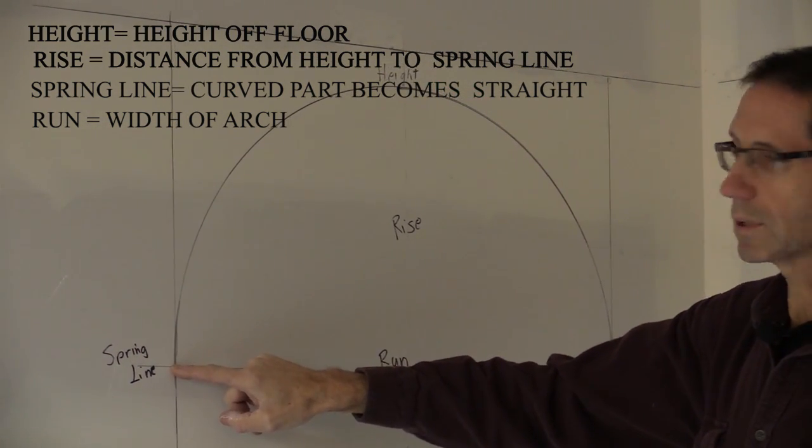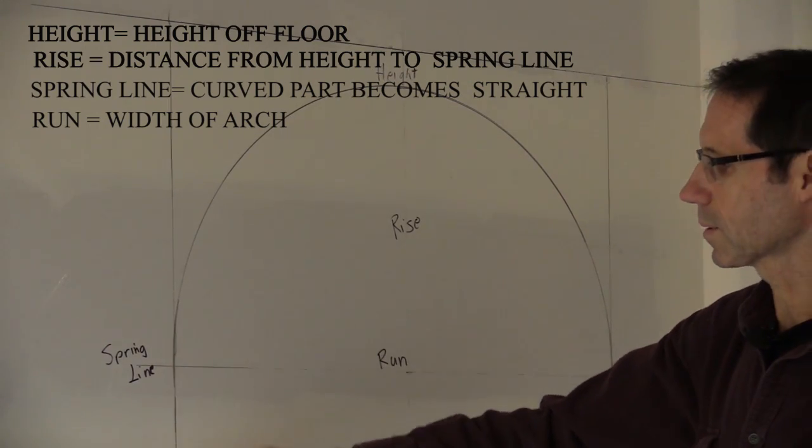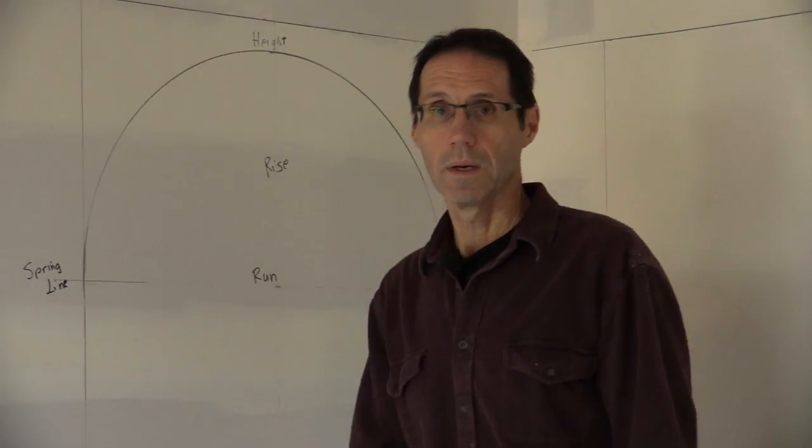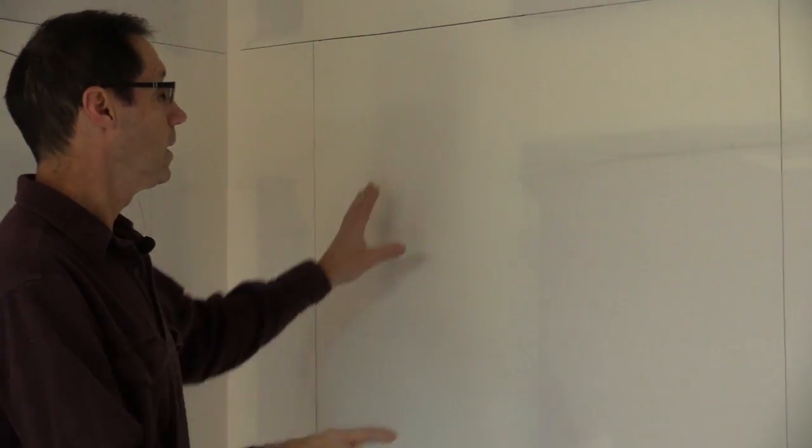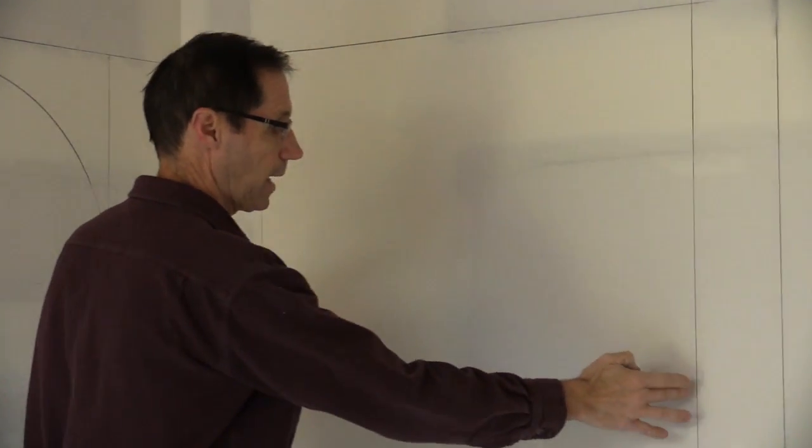Which is where the arch actually turns into a straight corner, straight edge. All right, I'm going to build three arches on this wall, and I'm going to start out in this little area here that I've sketched out. That's 36 inches wide.